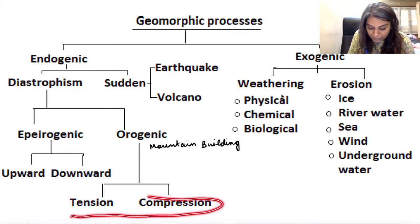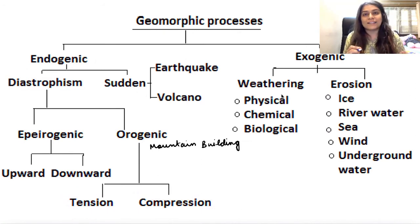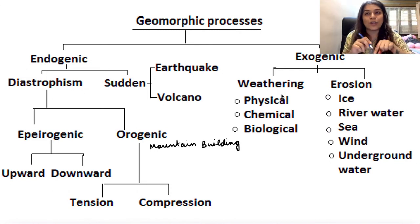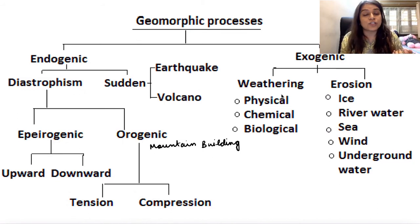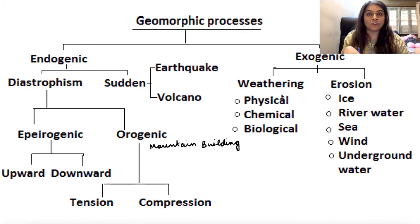Epigenic movement is the upward and downward movement. There are times when the magma in the interior tries to pull the surface below, causing depressions like the great depression we've read about. And sometimes instead of depressions, it pushes upwards — a feature we will study in one of the landforms later on.